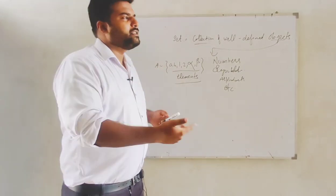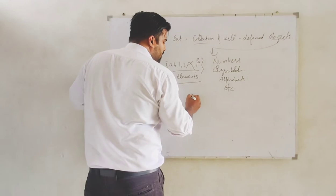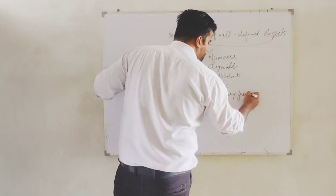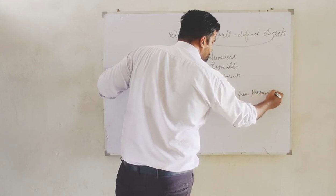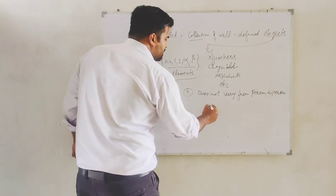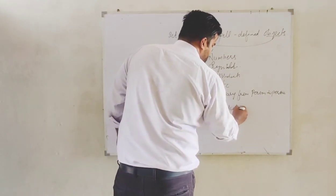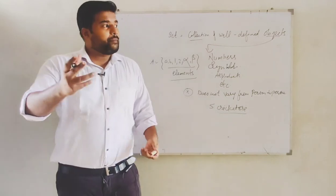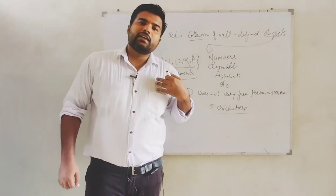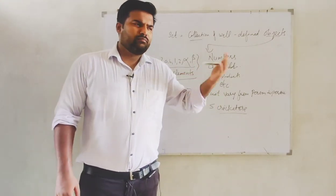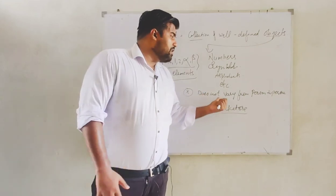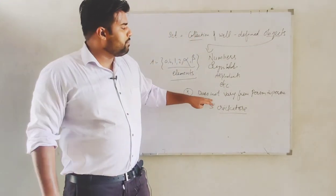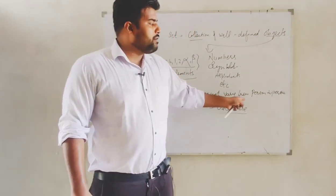Set is the most important concept here. A key property of a set is that it does not vary from person to person. For example, if I ask you to name five cricketers, one person may give different names than another. This means the answer changes from person to person.